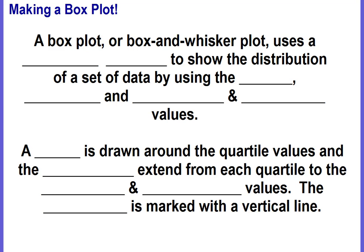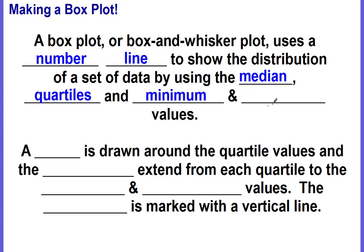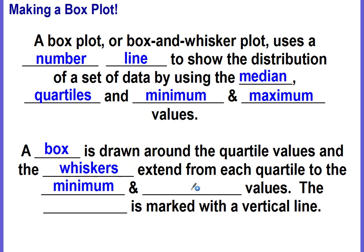So let's make a box plot. A box plot, or box and whisker plot, uses a number line to show the distribution of a set of data by using the median, the quartiles, and the minimum and maximum values. A box is drawn around the quartile values, the whiskers extend from each quartile to the minimum and maximum values, and the median is marked with a vertical line.